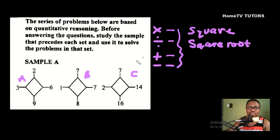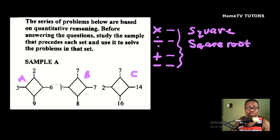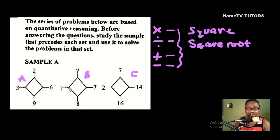Let us go to Set A — we have 2, 3, 6, 9. How are they related? When you multiply 2 by 3 we get 6. We're going to test that in the other sets. Whatever happens in Set A must also apply to Set B and Set C. In Set B, 7 times 1 gives us 7.